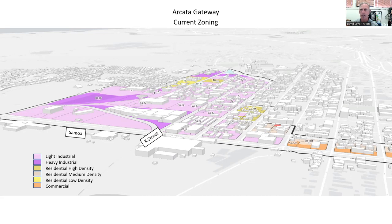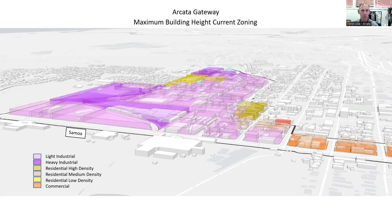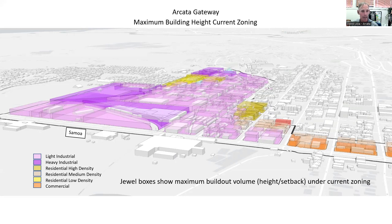Within current zoning, you can develop out to a certain building elevation. There are standards that limit floor area ratios and the massing allowed within those districts, along with setbacks and various other requirements. One way to visualize these is through glass boxes — transparent images of the maximum height combined with setback requirements. So within each district, there are various heights and densities of development allowed. These glass boxes show the maximum build-out under current zoning based on height and setback, though other standards can further reduce development footprint.